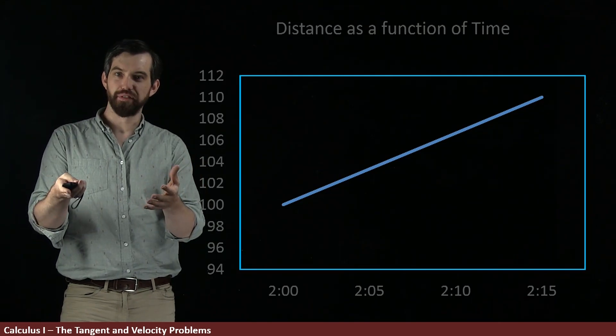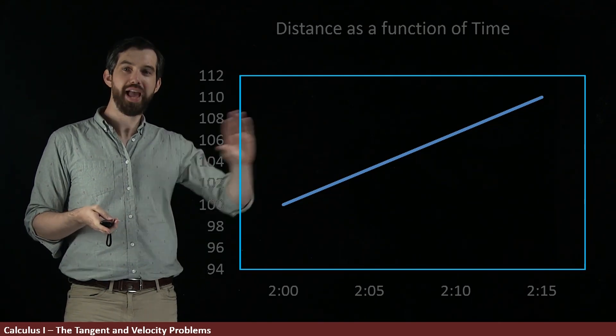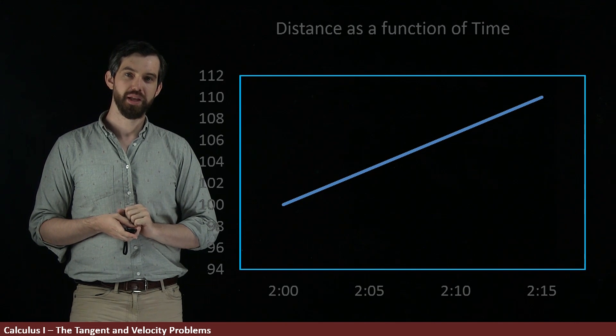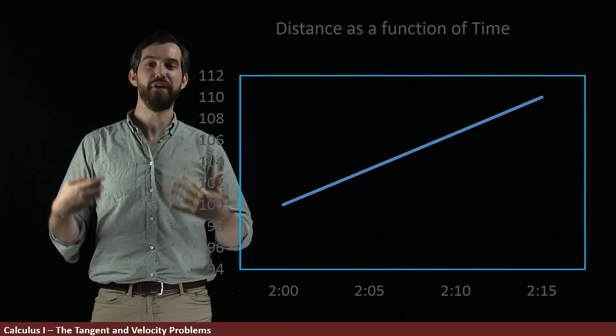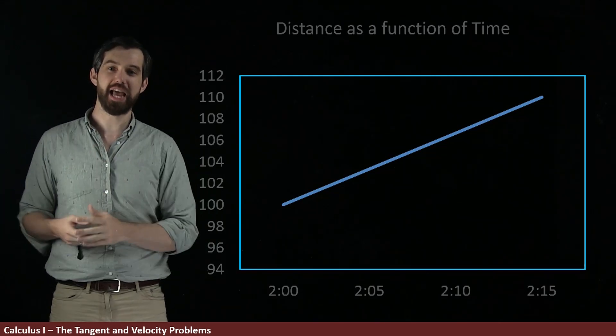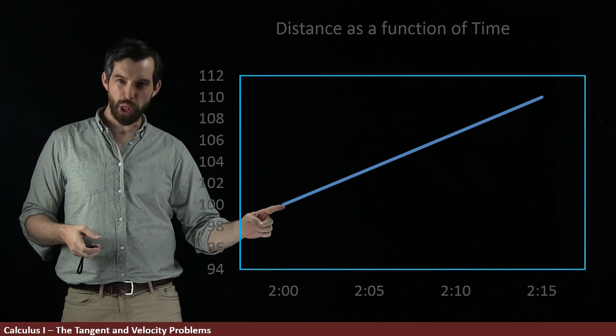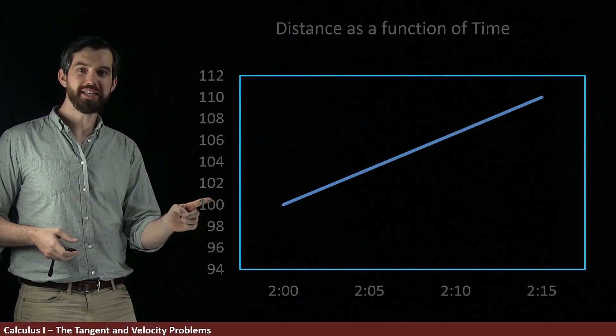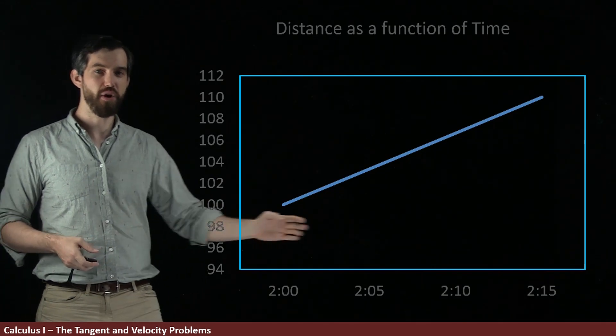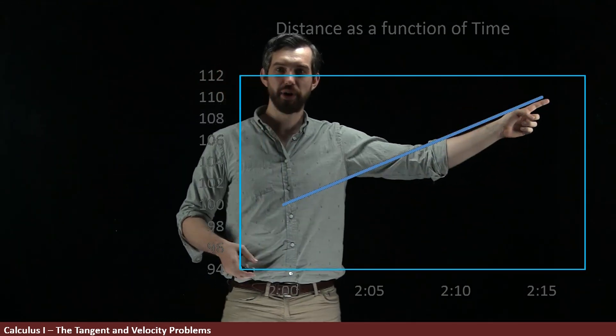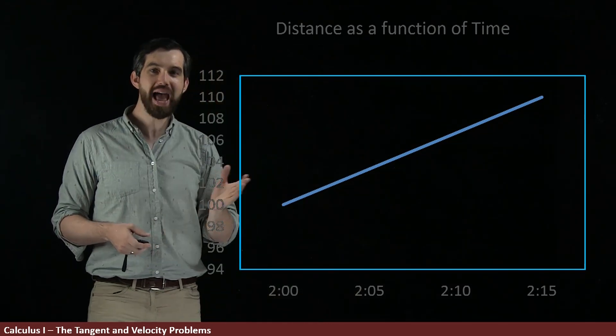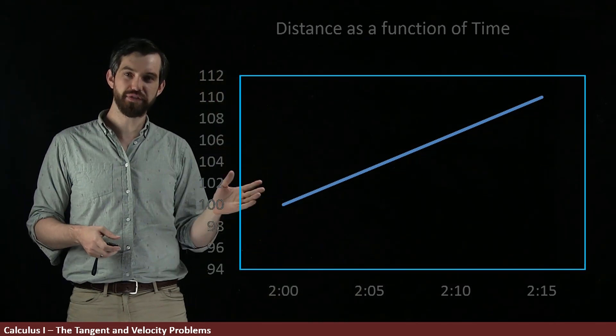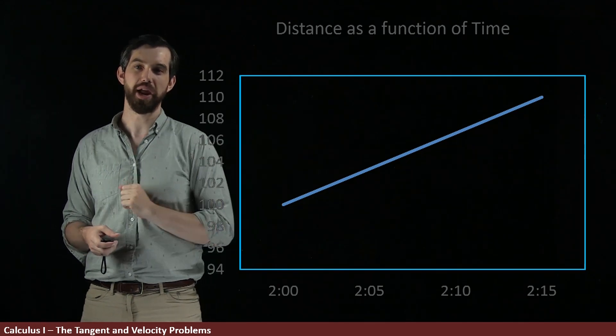Let's try to translate our velocity problem into a geometric picture. I've given you an example of a graph, the distance as a function of time, that represents the same example we saw before. So at 2 o'clock here, our car is hanging out at the 100 mile mark. And over here at 2:15, we're going to be up here at the 110 mile mark. And what we have is distance as a function of time going up in this straight line.